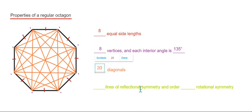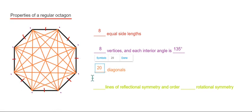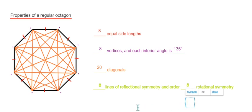And another thing you might be interested in is the reflectional and rotational symmetry. So this is the same as the number of sides. So it has eight lines of reflectional symmetry and it has an order of eight rotational symmetry.